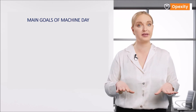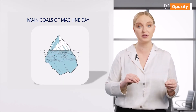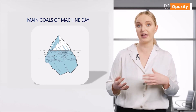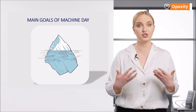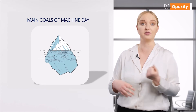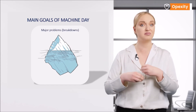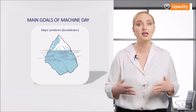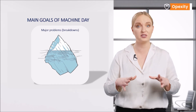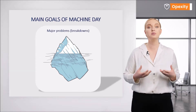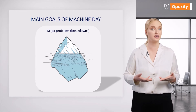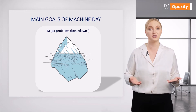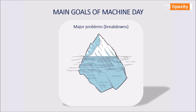Let us pause for a moment at the point concerning anomalies. You need to remember the difference between a failure and an anomaly. If you look at the iceberg shown on the slide, at the top part are failures — the shutdowns that we all see, primarily in the performance results of the machine. These are the stoppages that cause performance degradation. We are able to tell that a failure has occurred. In contrast, what is below the surface of the water under normal conditions is invisible to us. These are the anomalies.